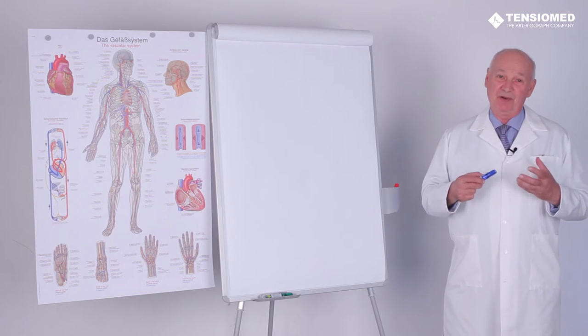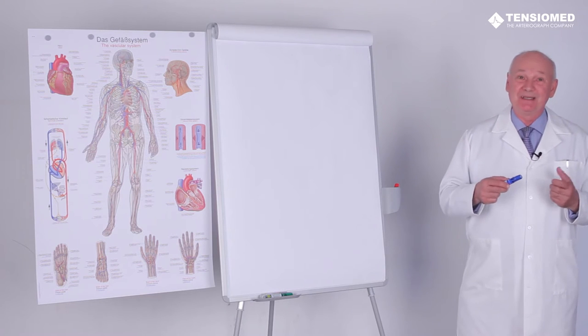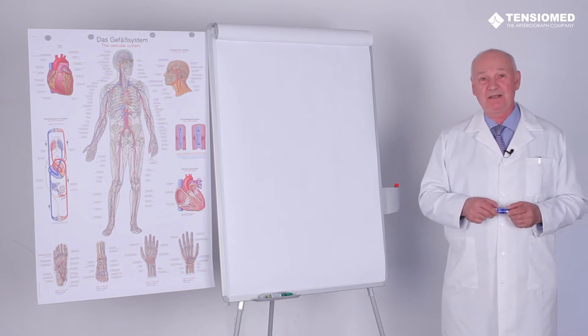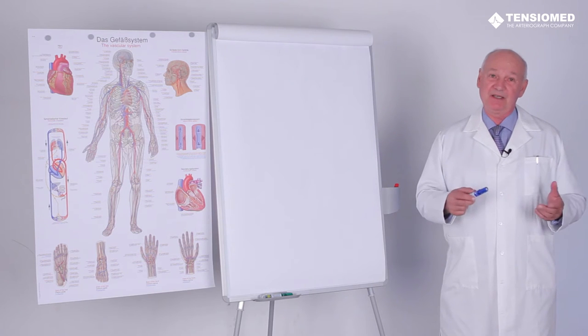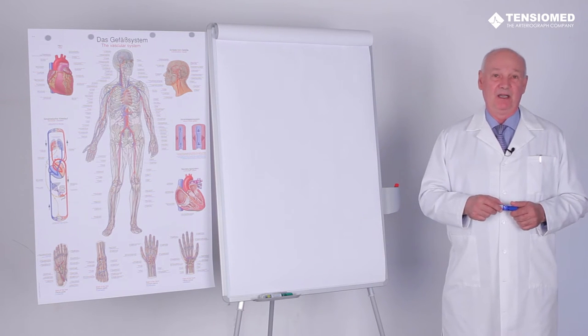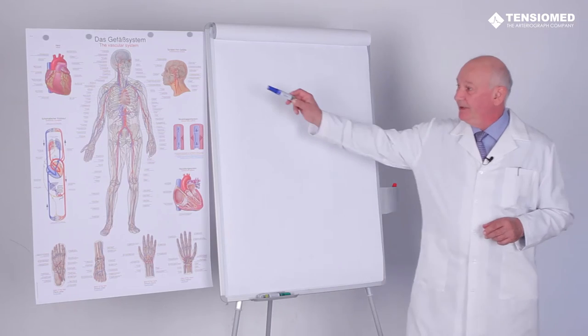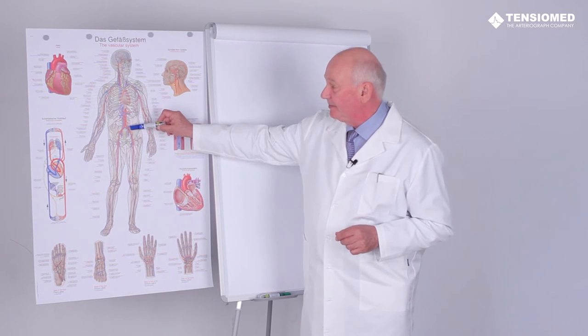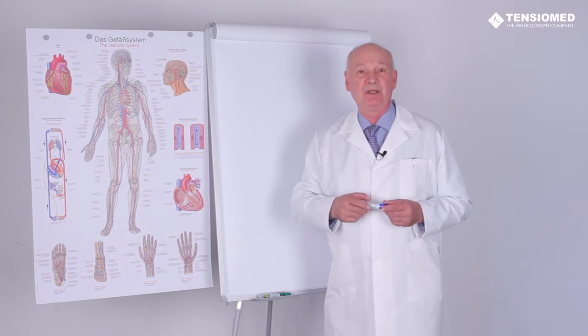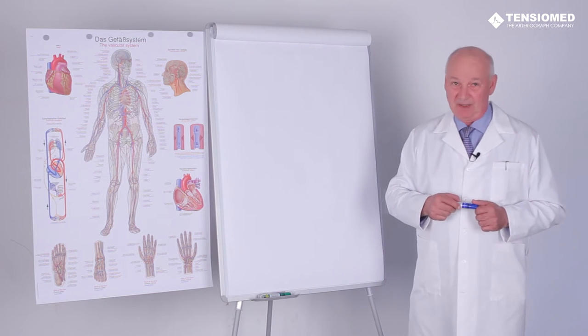Consequently, the more rigid — the stiffer the aortic wall is — the faster the pulse wave propagation and the faster the pulse velocity. We use the term regional pulse velocity because we have to estimate the whole region of the aortic pulse wave, which starts at the aortic root until the aortic bifurcation. So we are talking about regional aortic pulse velocity.